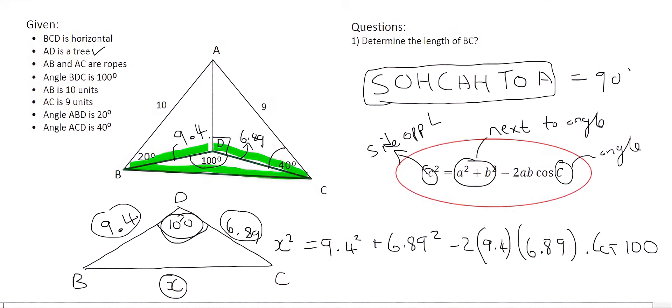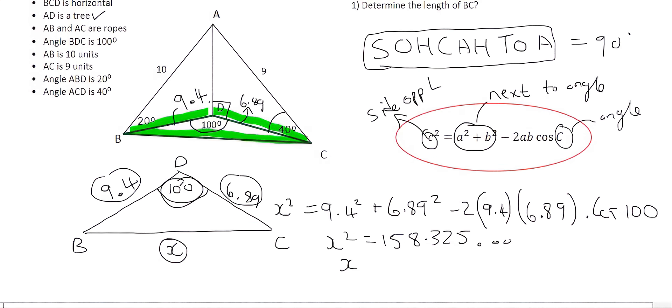Then you just go type all of that in on your calculator as you see it, and that gives you X squared is equal to 158.325. Then to get X alone you would take the square root of that. So we end up with a final value for X, X is going to have a final value of 12.58. And remember X is BC, so therefore BC is going to be 12.58.